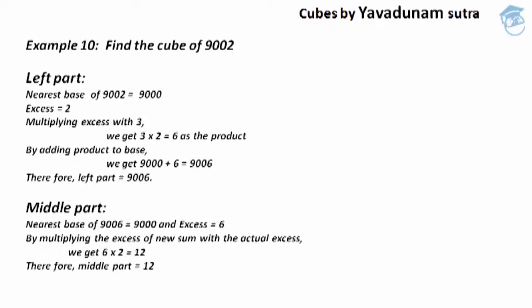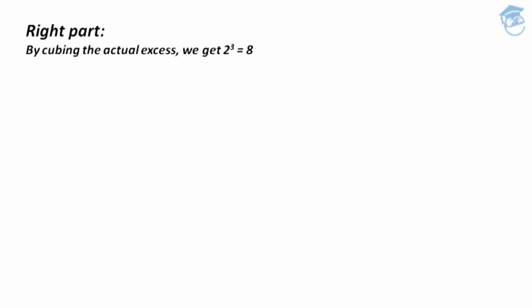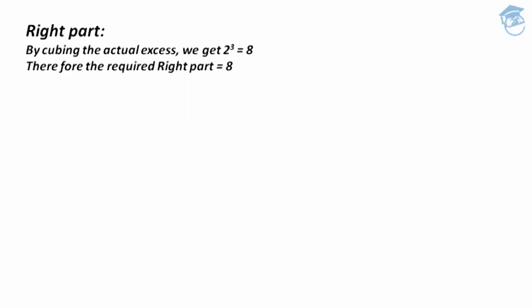After finding the middle part, we move to the right part. The first step here is to cube the actual excess. The actual excess is 2, and by cubing 2, we get 8 as the answer. This 8 is regarded as the required right part.